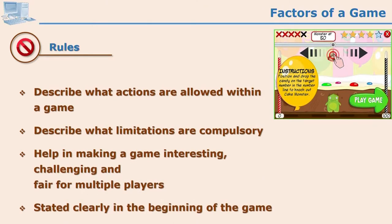Once the learner knows the goals, then the learner should be told about the rules of the game. The screenshot shows instructions there. Rules describe what actions are allowed within a game and all limitations which are compulsory. What they can do and what they cannot do — these rules also help in making a game interesting, challenging, and fair for multiple players. Whenever there are multiple players, these rules decide the roles of all learners.